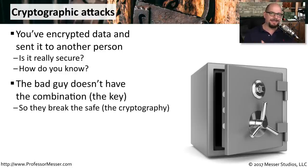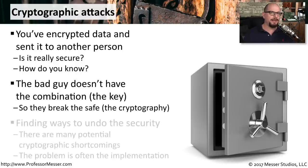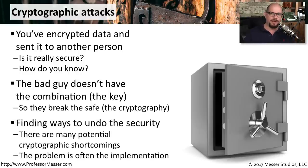The bad guy obviously doesn't have the combination to the safe, so they're going to find a way to get into it. They'll try every possible combination, or maybe they know that this particular safe was built in a way that allows access if you use the right kind of tools against it. Those are the ways the bad guys are using to break our cryptography — sometimes it's a cryptographic shortcoming, or sometimes it's just the way that we've implemented the cryptography.